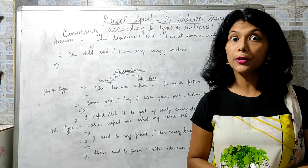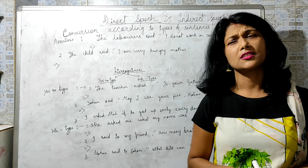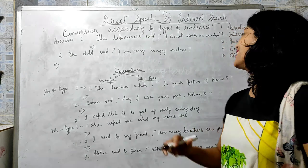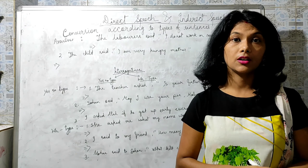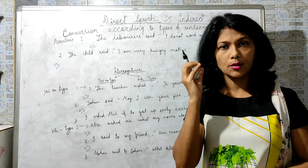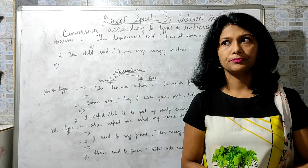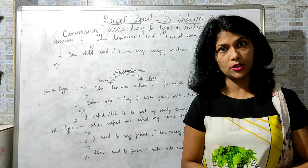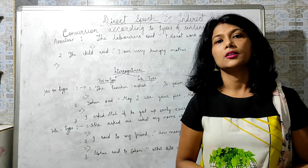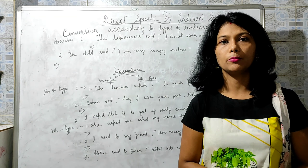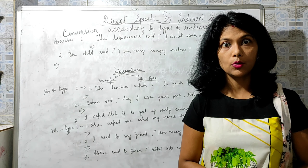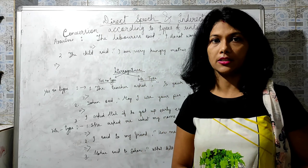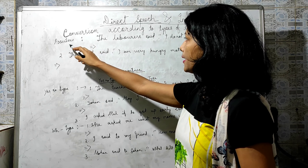Exclamatory sentences express exclamations: 'Hurrah, we have won the match!' 'Alas, the boy died.' Optative sentences express wishes or hopes — 'Could I be the prime minister of India?' Optative may also be blessings like 'May you live long,' or curses like 'May you go to hell.'